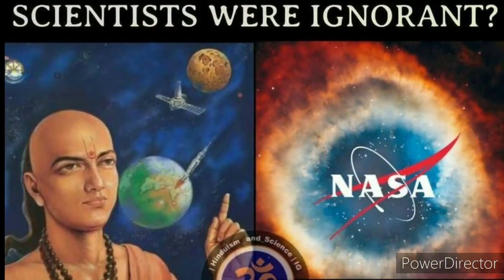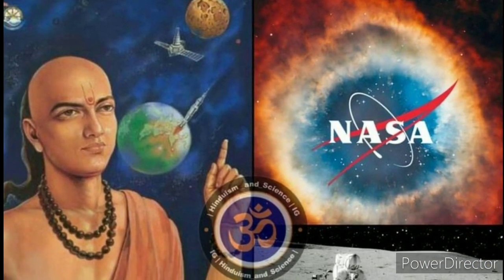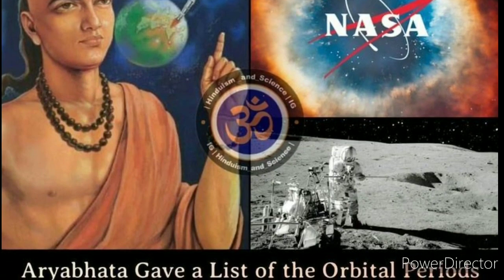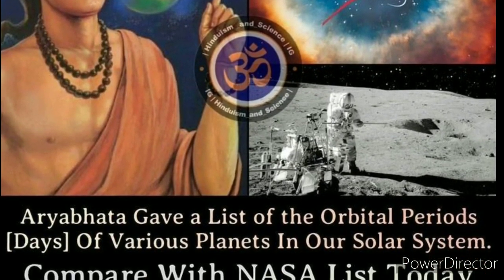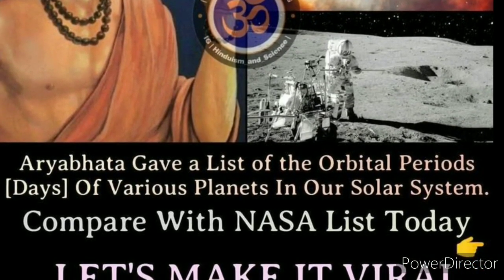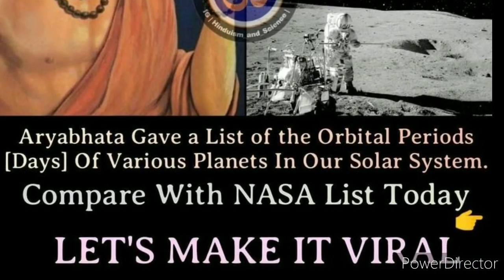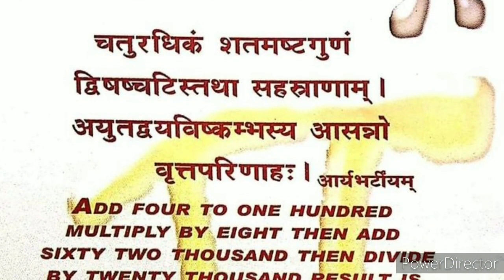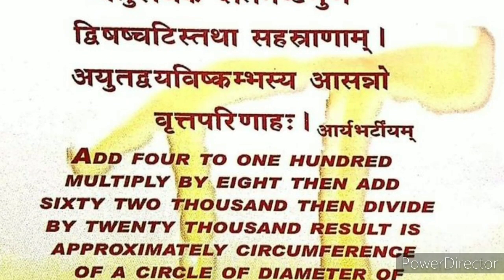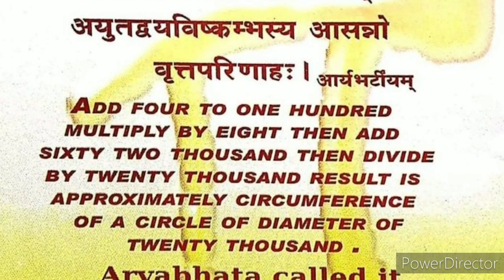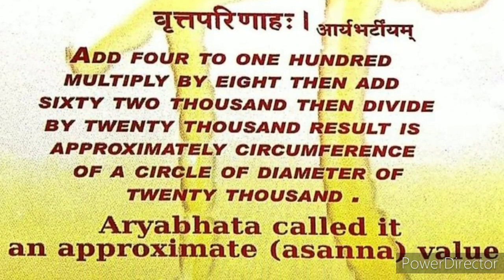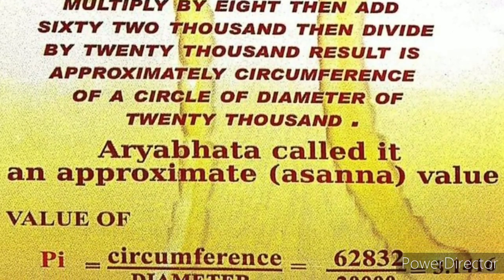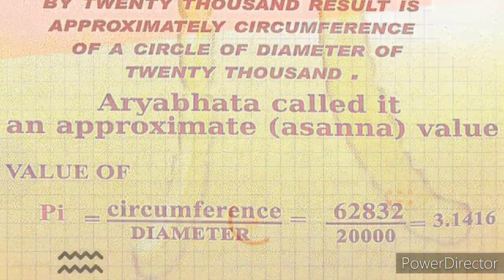This concept of zero is considered one of the greatest achievements of Indian mathematics. The rules for using zero as a digit were first introduced in Brahmasphutasiddhanta by Brahmagupta, although in some instances his rules differ from modern rules — one being that dividing zero by zero yields zero.